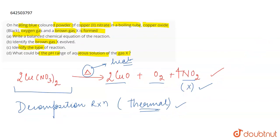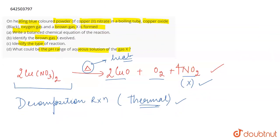Now what will be the pH range of the aqueous solution of the brown gas X? So if we talk about this brown gas X NO2, then it is an oxide of non-metal. It is a non-metallic oxide because nitrogen is a non-metal. So it forms a non-metallic oxide and non-metallic oxides are acidic in nature.